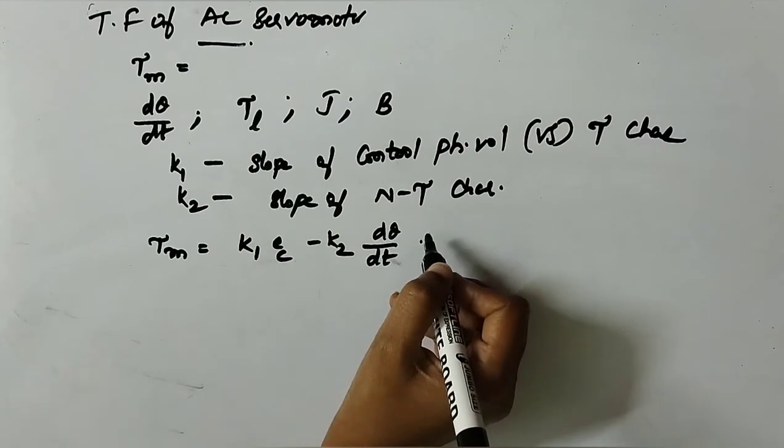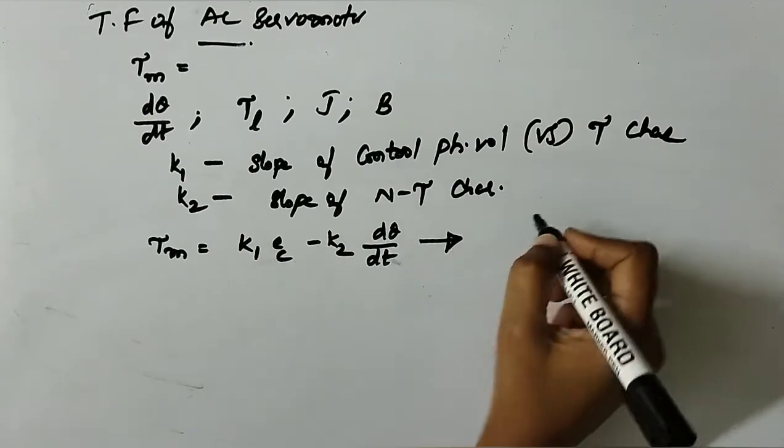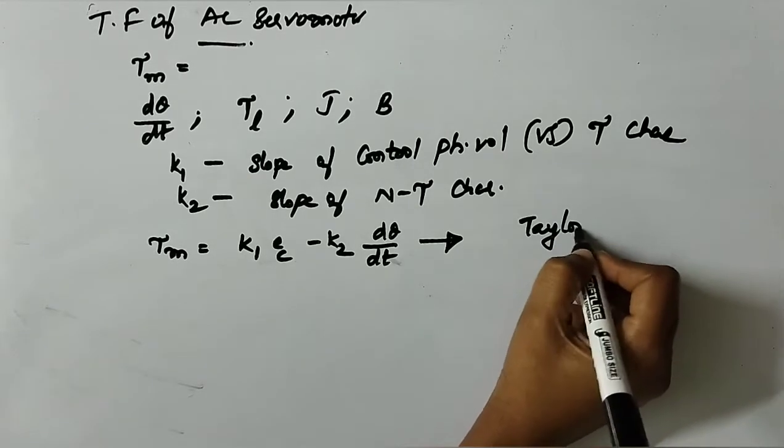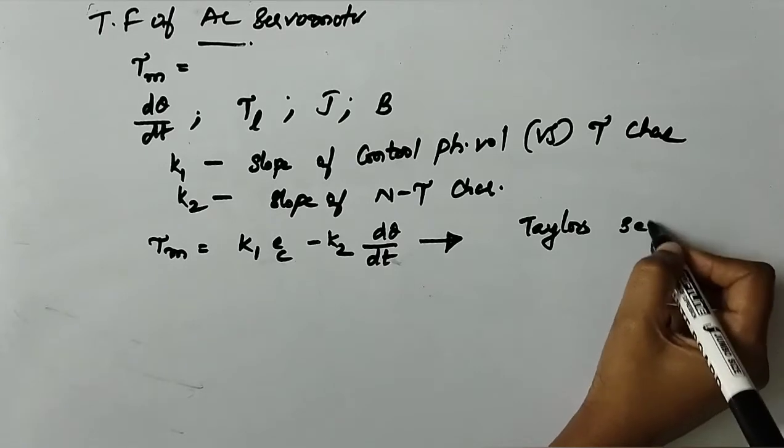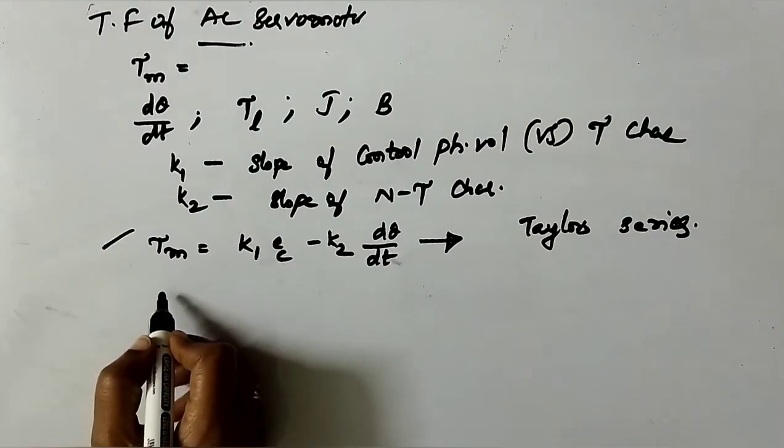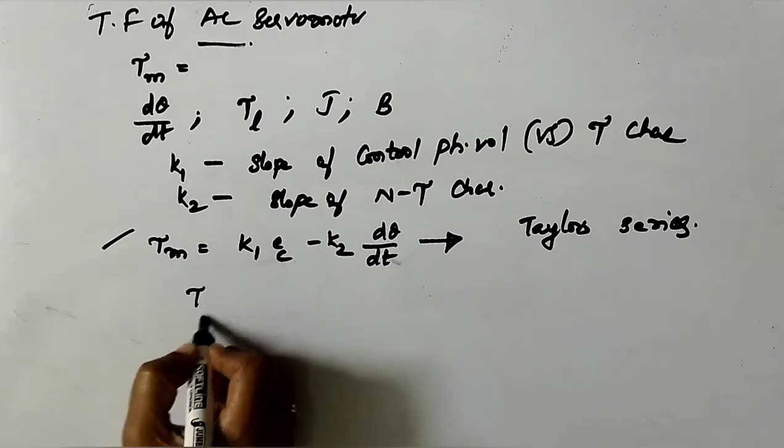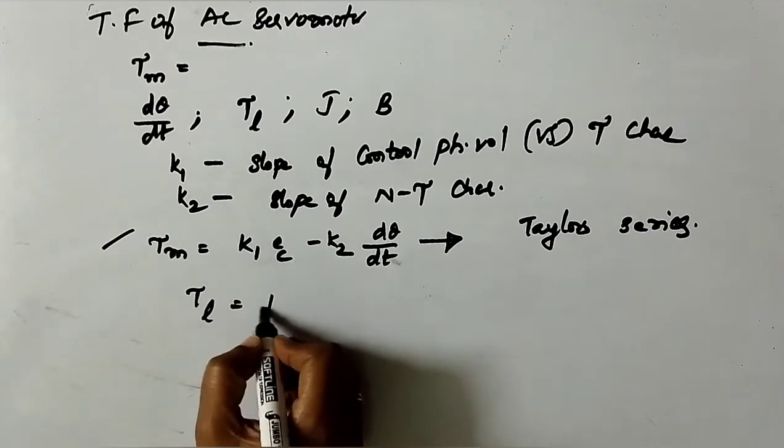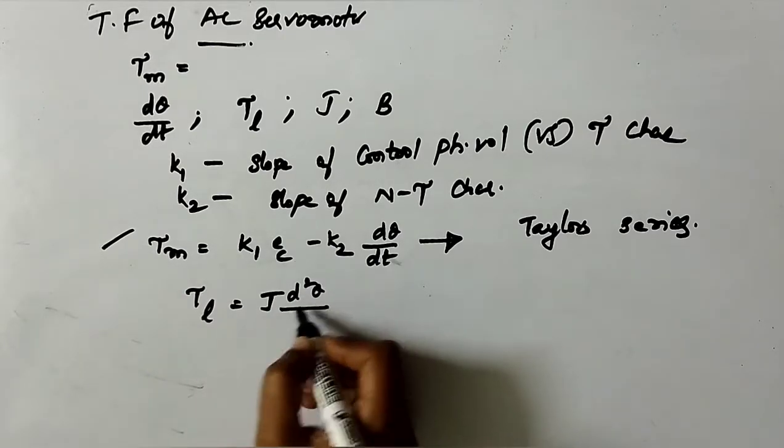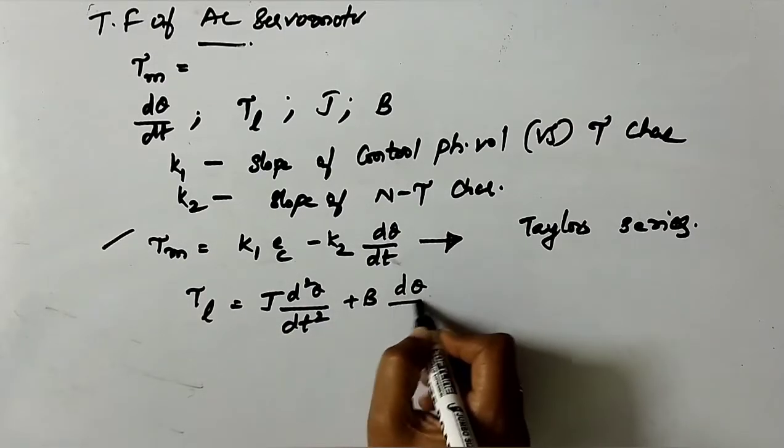The rotating part of the motor and the load can be modeled by the equation. As you know, load torque τL = J·d²θ/dt² + B·dθ/dt. We have obtained this equation in finding the transfer function of DC armature control motor also.